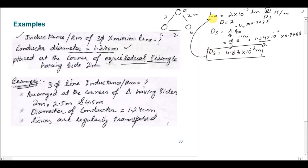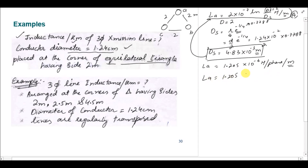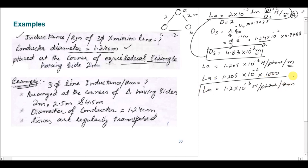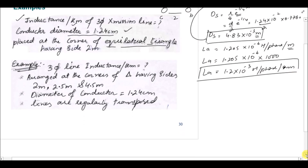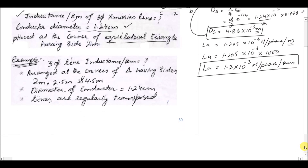Plugging the Ds value and D = 2 meters into the equation, the inductance of phase A is La = 1.205 × 10⁻⁶ Henry per phase per meter. To convert to per kilometer, we multiply by 1000, giving La = 1.205 × 10⁻³ Henry per phase per kilometer. This is the inductance value for the transmission line with equilateral spacing between the phases.